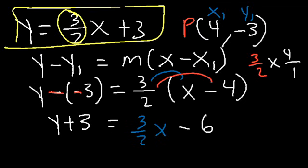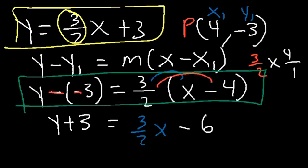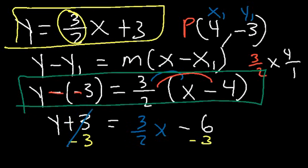The answer in point-slope form is y plus 3 equals 3 over 2 times the quantity x minus 4. Now, once you distribute the 3 over 2, you convert it to slope-intercept form. To finish, subtract both sides by 3. So the answer in slope-intercept form is y is equal to 3 over 2 x minus 9.